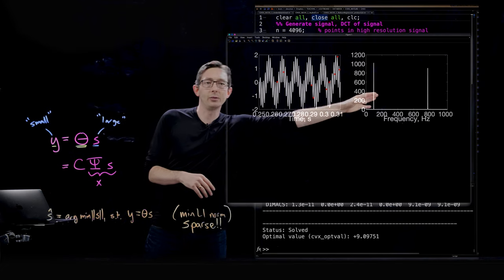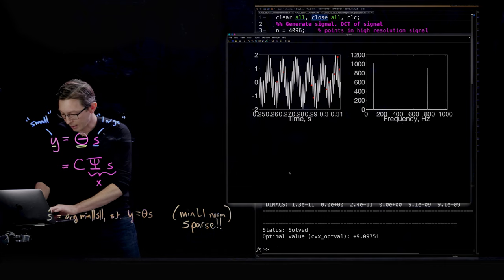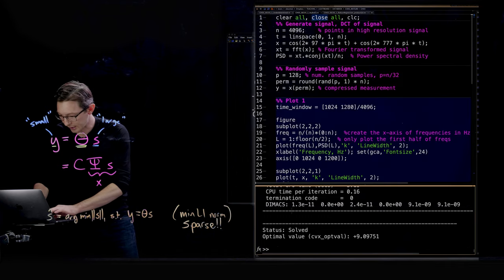And in the frequency domain the power spectrum you can see that there's clean two peaks because this is a two-tone cosine wave.